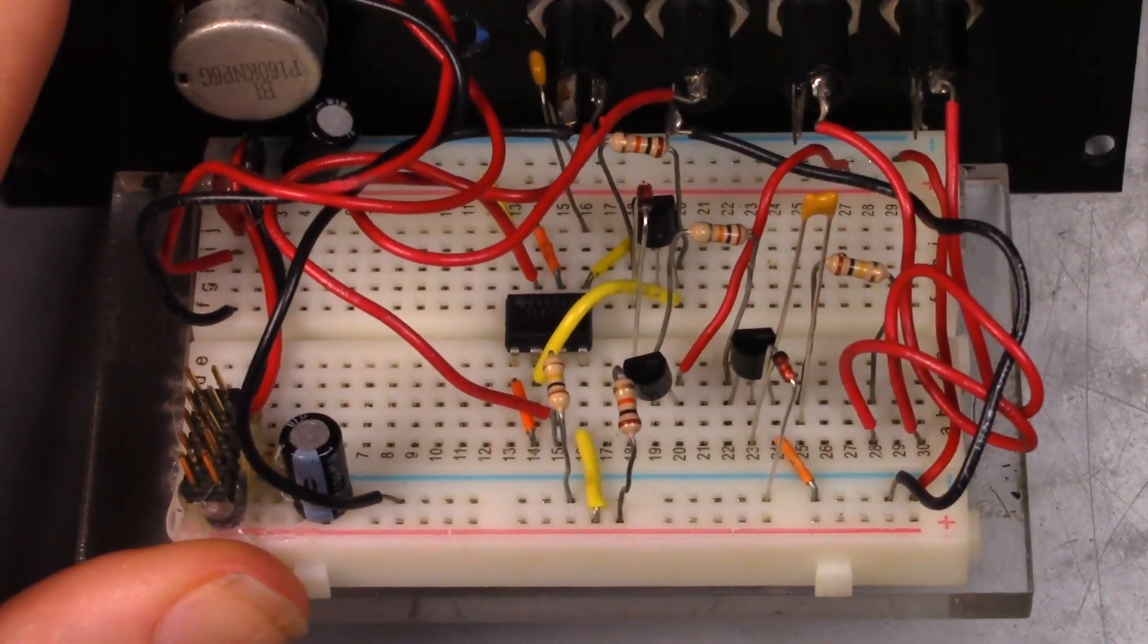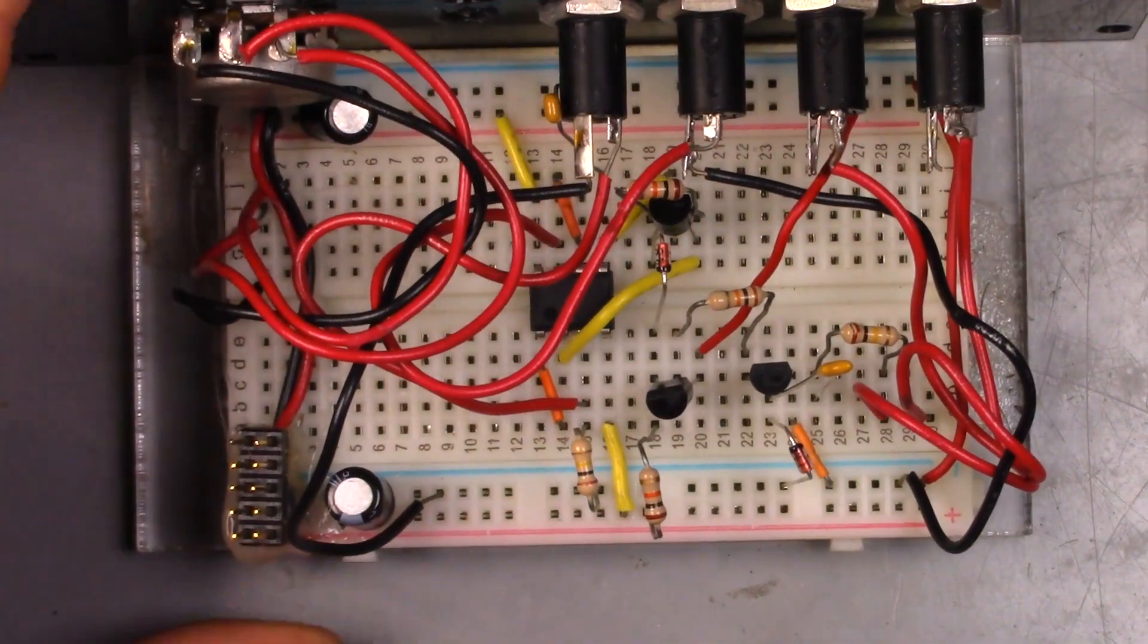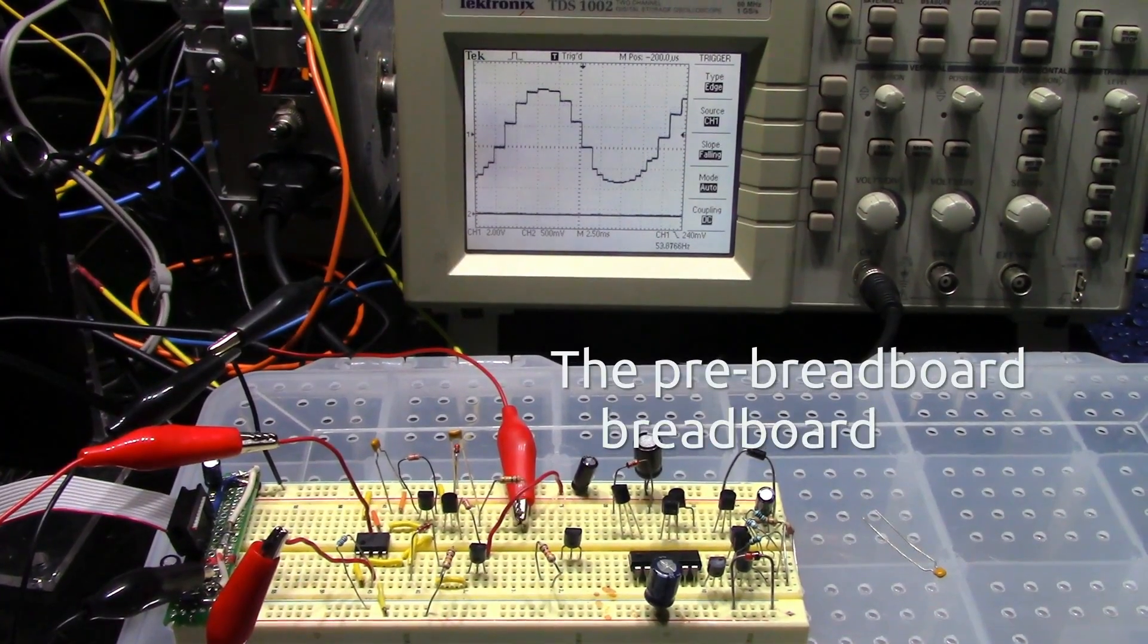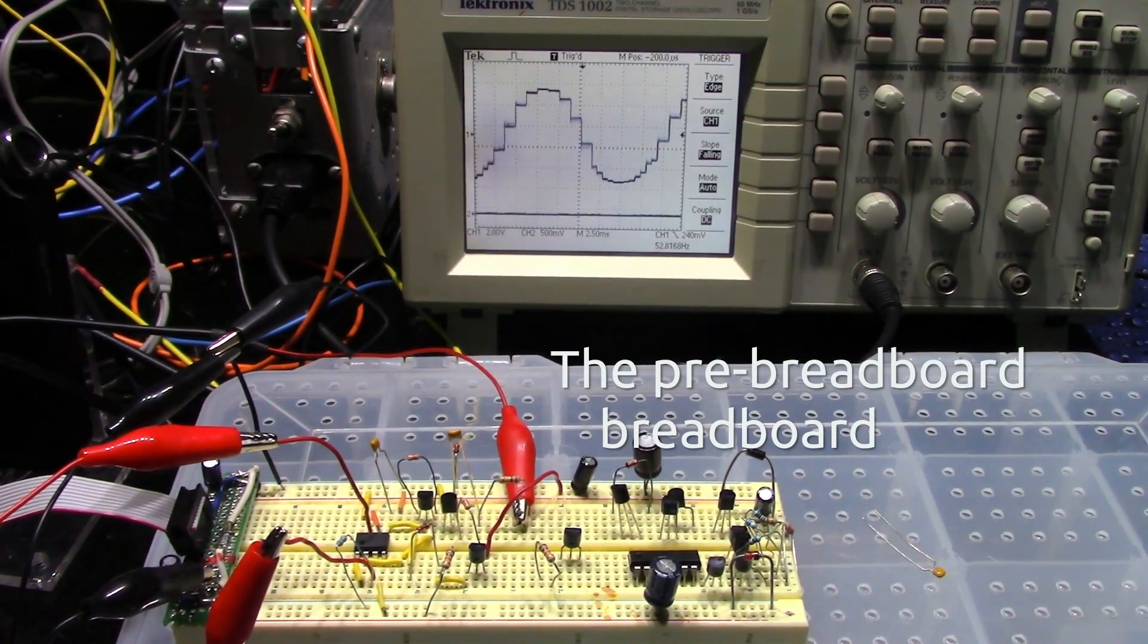I know there are some other uses that people have for sample and holds, but I am primarily going to use this circuit for sample rate reduction, which works like this.